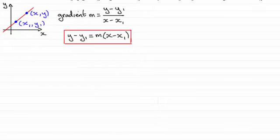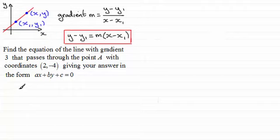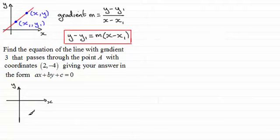Let's do a common example. Find the equation of the line with gradient 3 that passes through point a with coordinates (2, -4), giving your answer in the form ax plus by plus c equals zero. I'd like to draw a sketch — drawing a sketch gives you an idea of what the problem's about and can help check whether you're getting the right types of answers. So we've got point a with coordinates (2, -4): that's 2 across and 4 down.